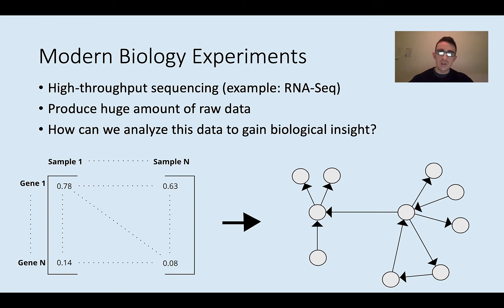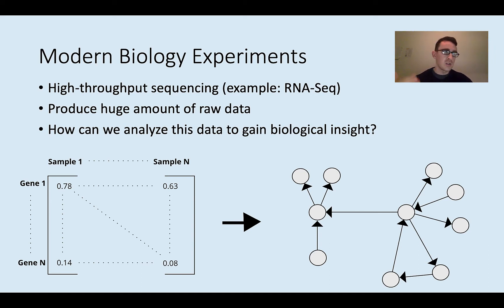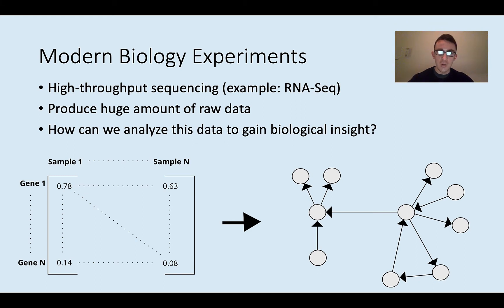An example of this is an experiment called RNA-seq. RNA-seq is a way of quantifying the amount of RNA transcripts in a cell, or really in each cell in a population. This is one example of a high-throughput sequencing experiment.